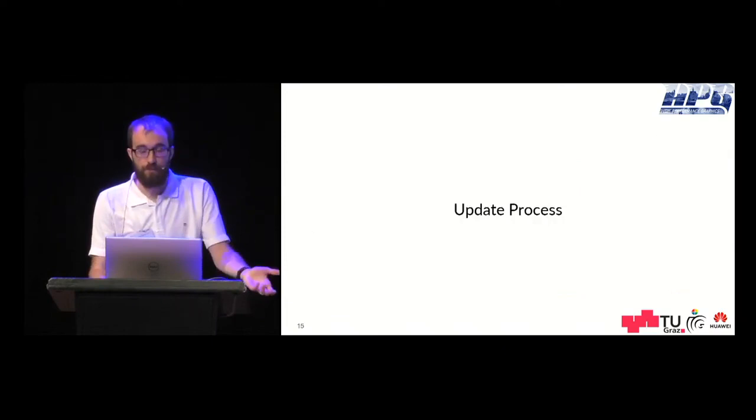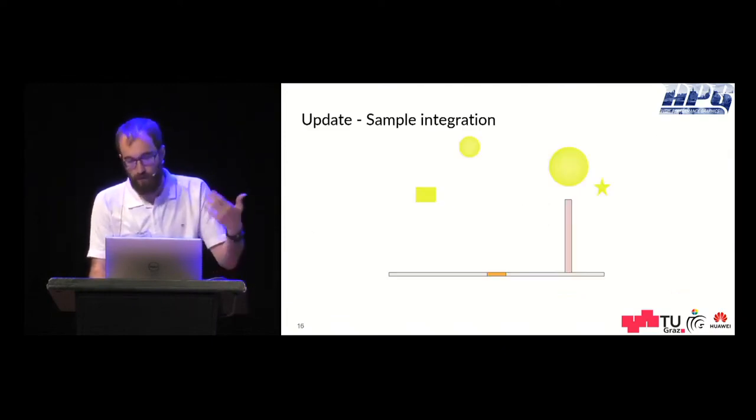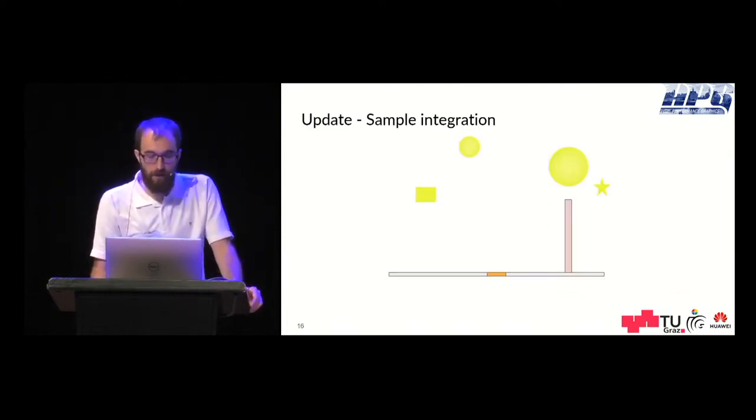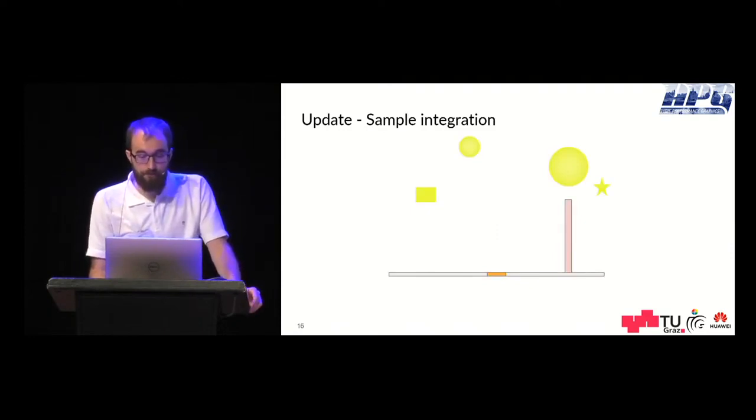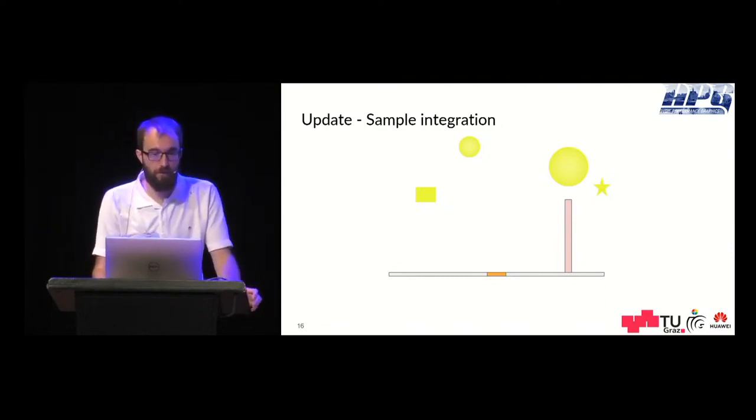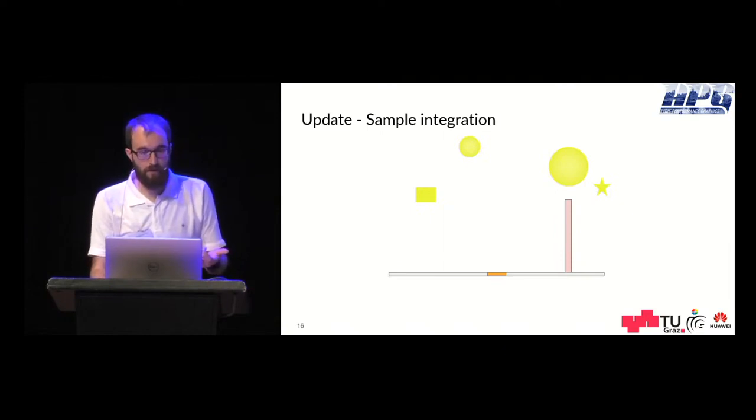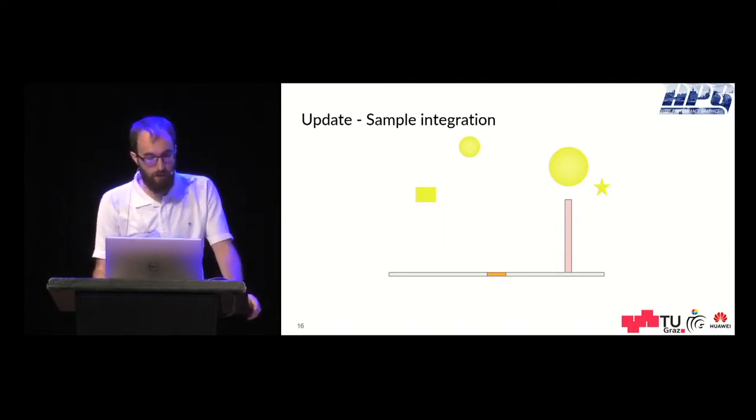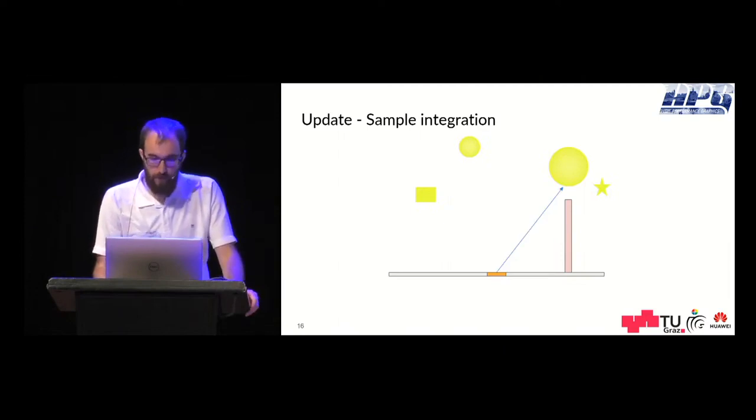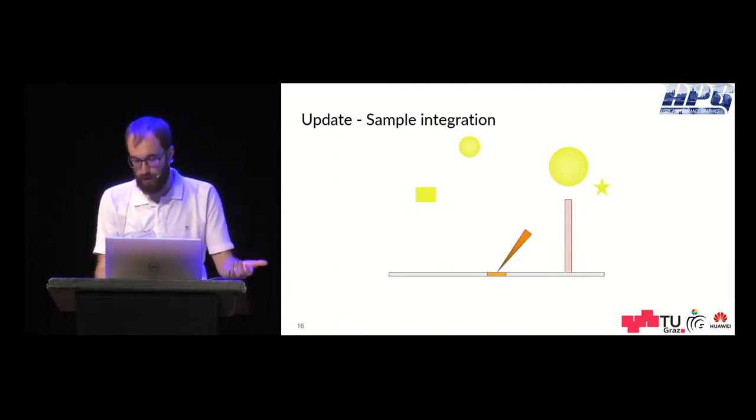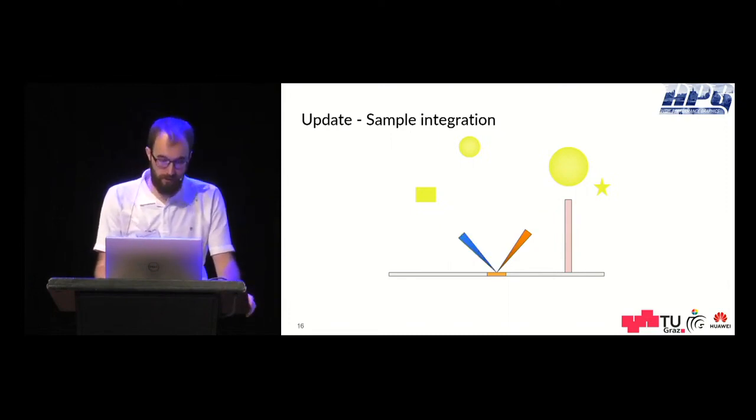For the update process I have a very simple scene here. For each surface cache entry we randomly sample all scene light sources, so emissive surfaces, environment maps and area light sources. Just an example here.